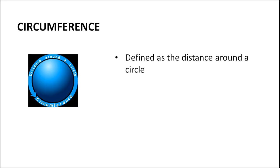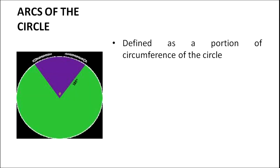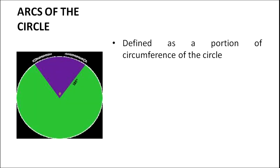Let's see another important concept related to this topic: circumference. Circumference can be defined as the distance around a circle. If we draw a circle and try to measure the distance around it, that is called the circumference. We will also deal with another new concept called the arcs of the circle. An arc can be defined as a portion of the circumference of the circle. The purple colored part in this picture shows the arc of the circle.